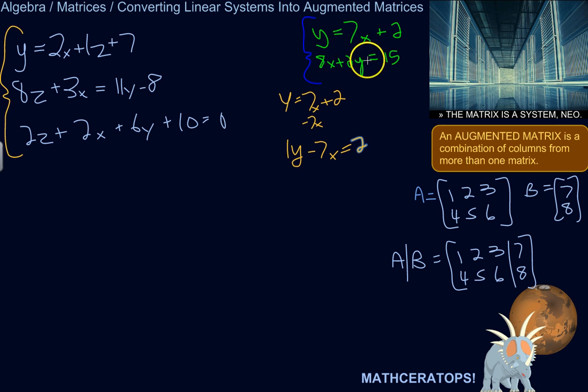This one has the x first and the y second, so let's just flip this one around. So it's negative 7x plus 1y equals 2. That's this equation.